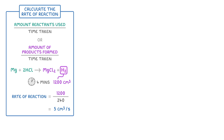The problem with this type of calculation though, is that it only gives us the average rate during those 4 minutes. Whereas in reality, the reaction would have been fastest at the beginning, and then it would have slowed down as the reaction progressed. And by 4 minutes, it might have even finished.